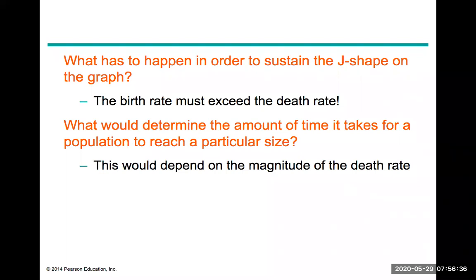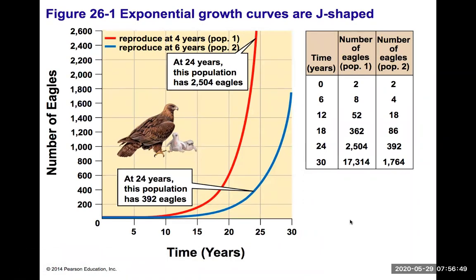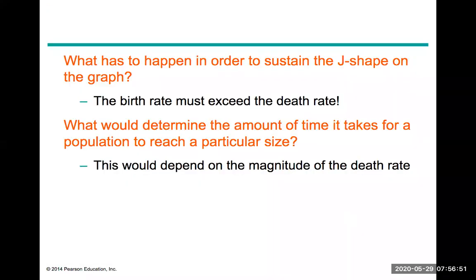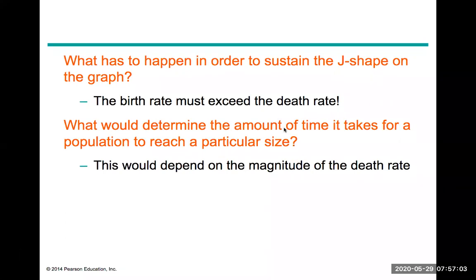Both lines on the graph resemble the letter J — we call this a J-shaped curve, characteristic of exponential growth. To maintain this J-shaped expansion, the birth rate must far exceed the death rate. The time it takes for a population to reach a particular size depends on the magnitude of the death rate.